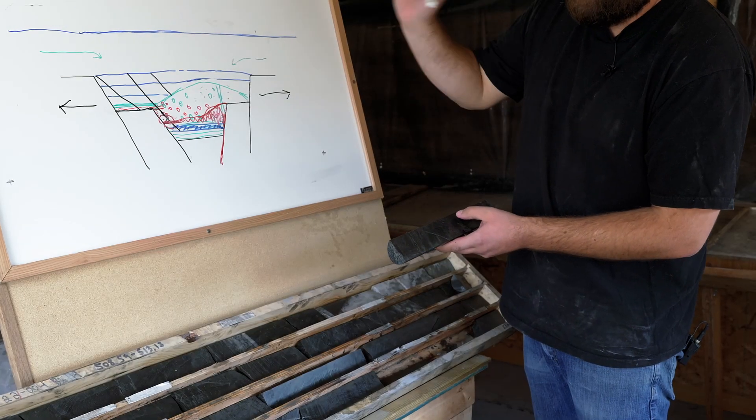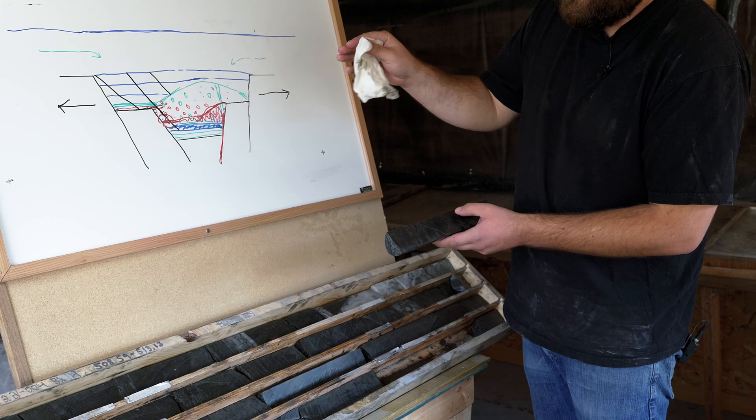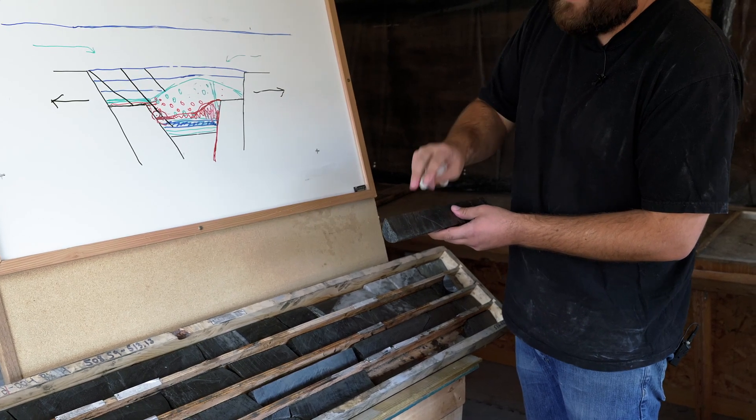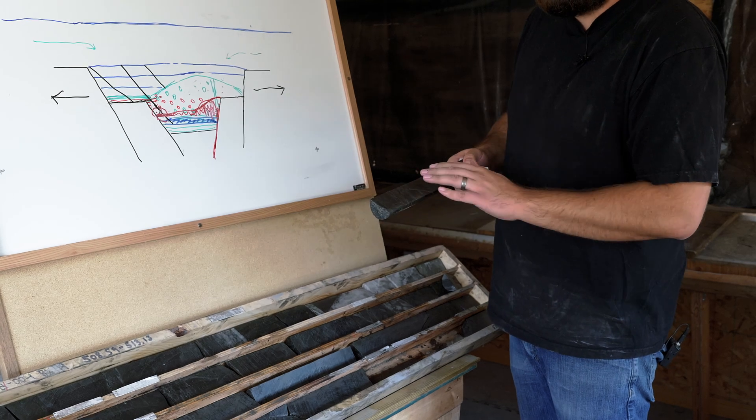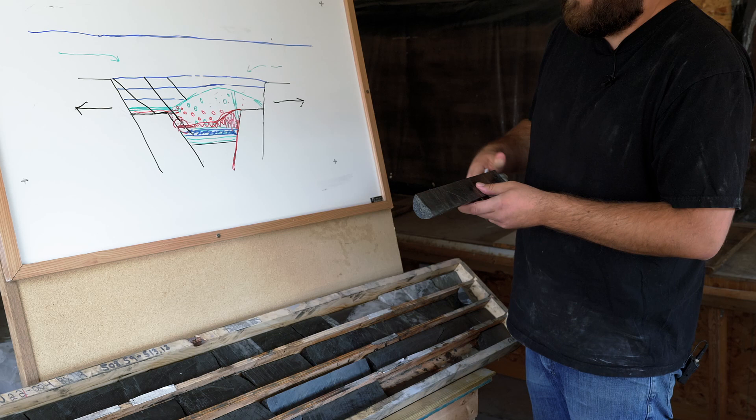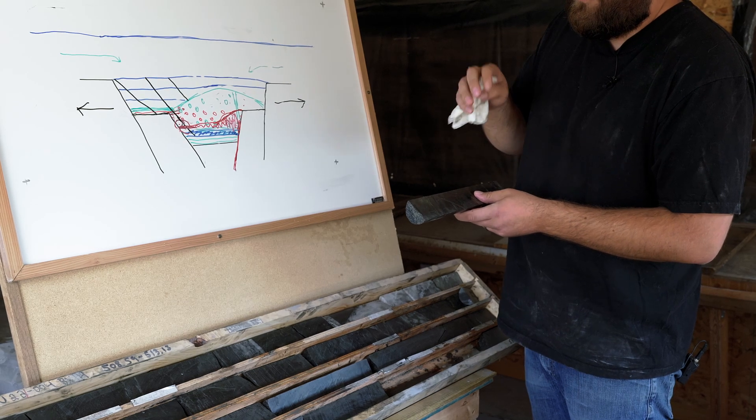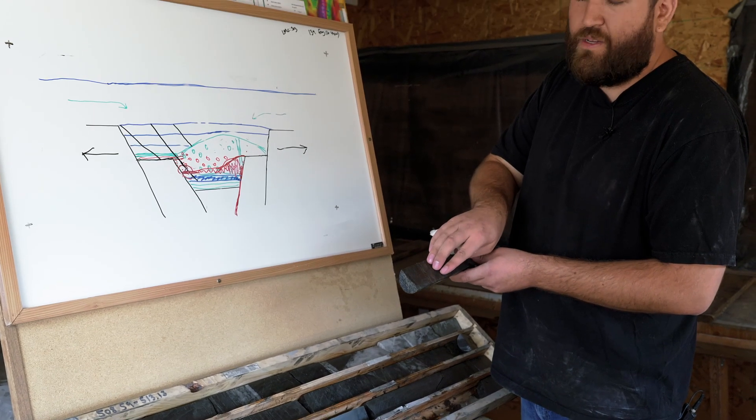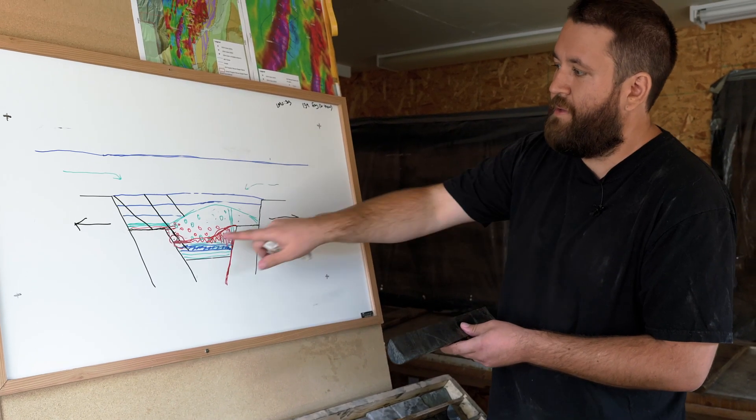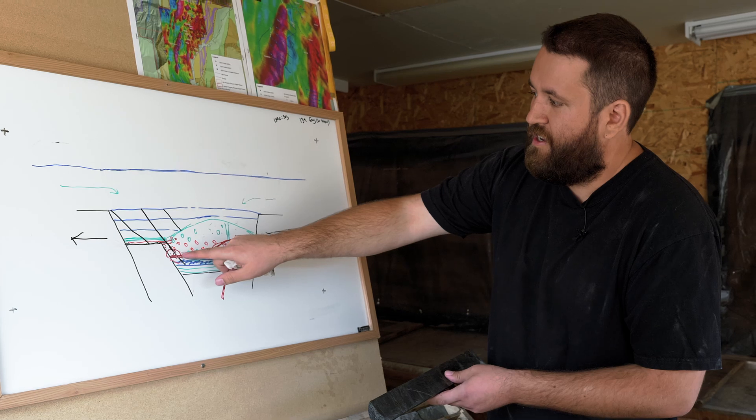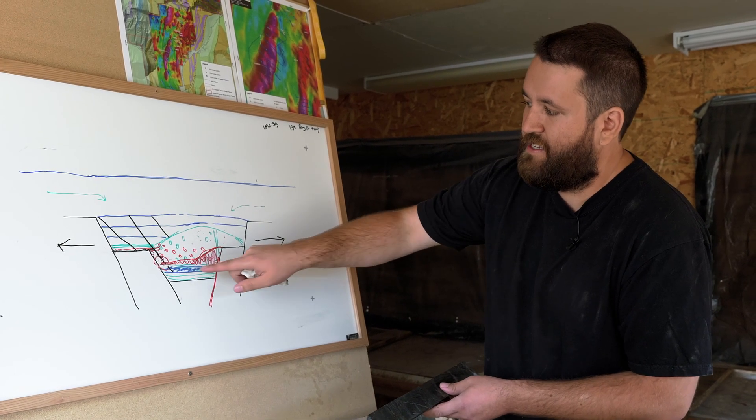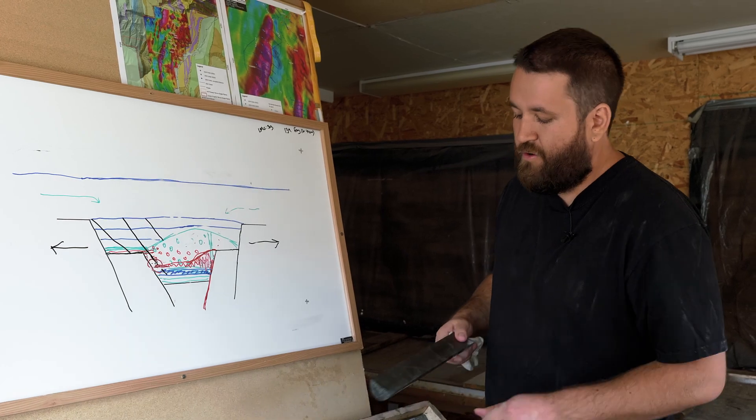Unlike the clasts that we saw in the fragmental that also had galena or lead mineralization, these are almost purely sphalerite and zinc. At this point, we're well below the horizon that we would interpret as the main ore horizon. What we're seeing now is impregnated sediments of remobilized zinc. So a secondary fluid would have come in, it would have remobilized the zinc and moved it stratigraphically down into the permeable sediments of the lower Aldridge formation.